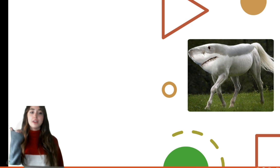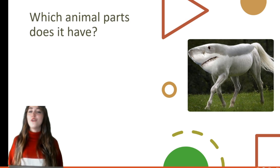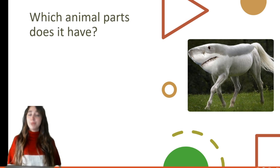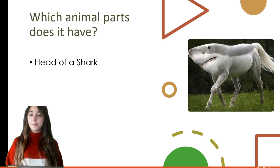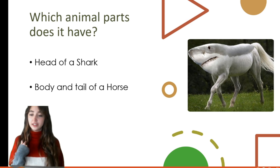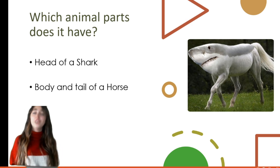How about this one? It looks very dangerous! Which two animals are mixed up? Yes — a shark and a horse. It's a good combination! Which animal parts does it have? It has the head of a shark and the body and tail of a horse. Can it swim or run? What do you think? Just use your imagination!